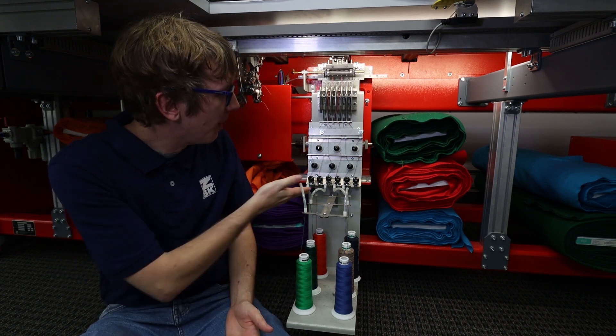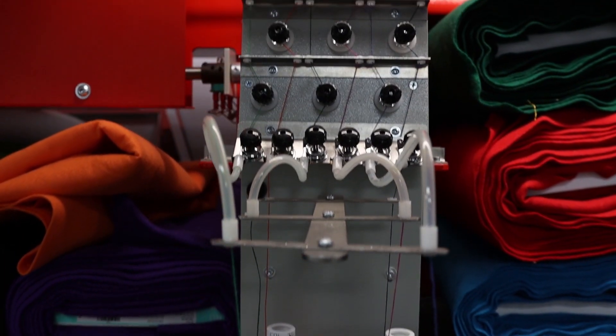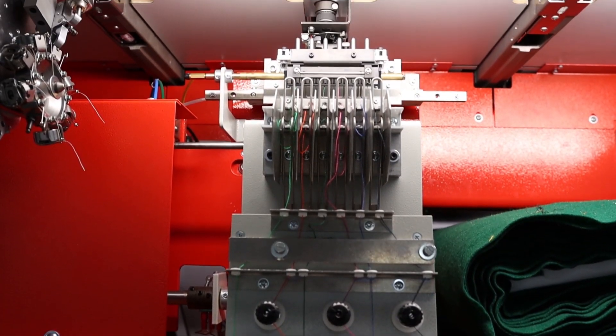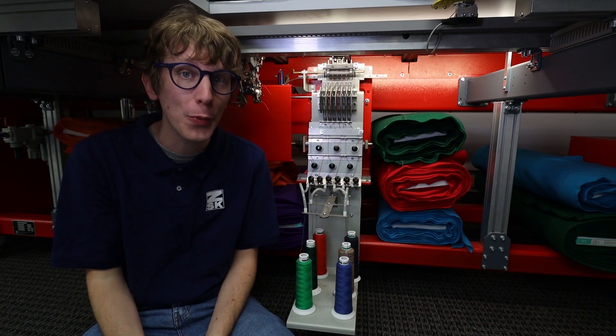The thread is fed up here through this entire tensioning system and into the top piece. Now the exciting part on a K-head embroidery is that there's no rotary hook underneath there. There's just one needle. It's a continuous thread the whole way through the piece.